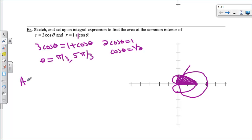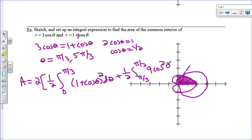So I'm going to have my area, which is going to equal, I'm doubling this because I'm going to use symmetry, 1 half the integral from 0 to pi over 3 of 1 plus cosine theta squared d theta. Now that was going to give me the area until I got to that point of intersection. And then I'm going to add to this 1 half the integral from pi over 3 to pi over 2 of my circle squared, which would be 9 cosine squared theta d theta.